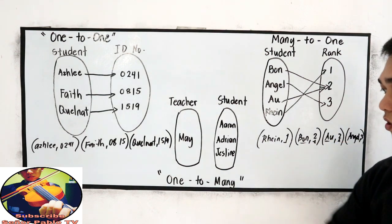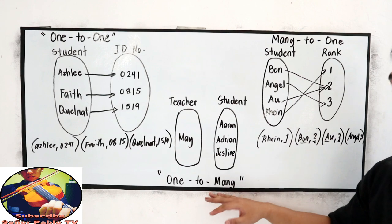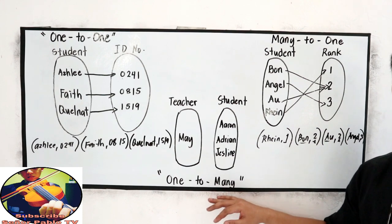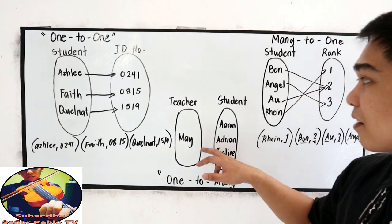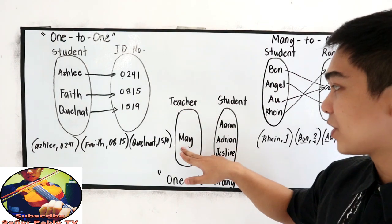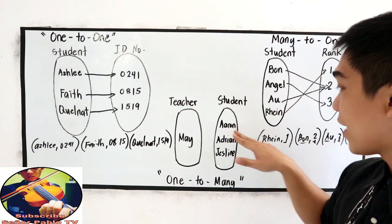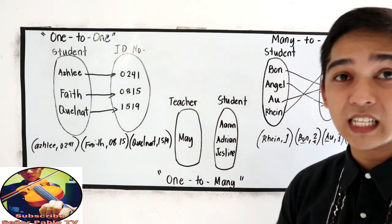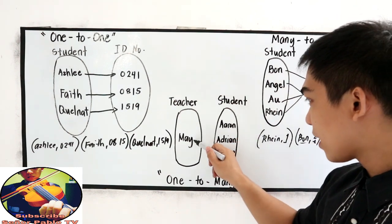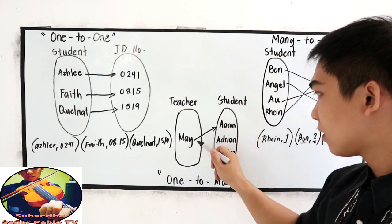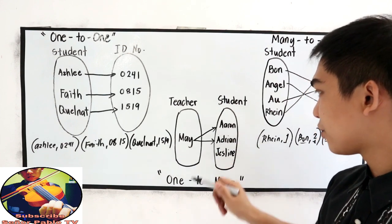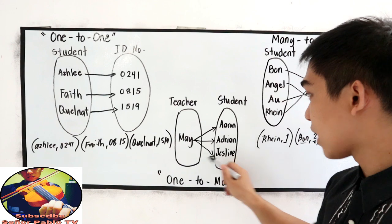And last, we have the one-to-many correspondence. Let's say, we have a name of a teacher, which is Teacher May, and the following students, Aaron, Adrian, and Jess Lian. So, for Teacher May, it goes to Aaron, goes to Adrian, and goes to Jess Lian.